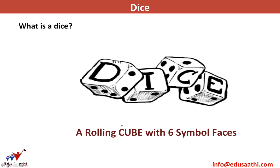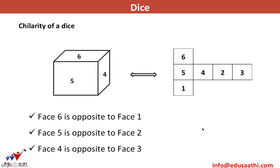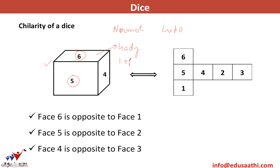What is a dice? A rolling cube with six symbol faces is called a dice. Now we look at the structure of the dice here. This is a structure of a normal dice, the kind we use while playing a game of Ludo or Snakes and Ladders. In a dice, every face — like six is a face, five is a face — will have four adjacent faces and one opposite face.